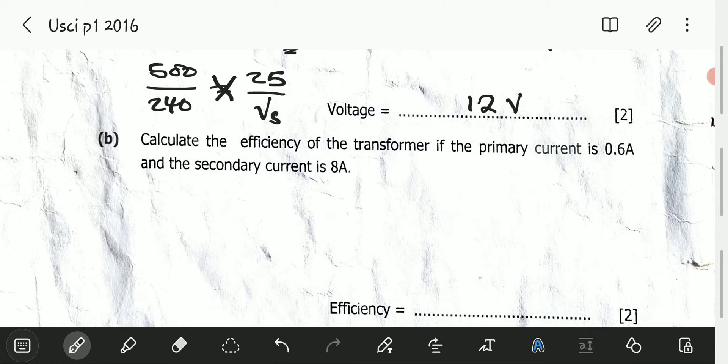Part b: Calculate the efficiency of the transformer if the primary current is 0.6 ampere and the secondary current is 8 amperes.